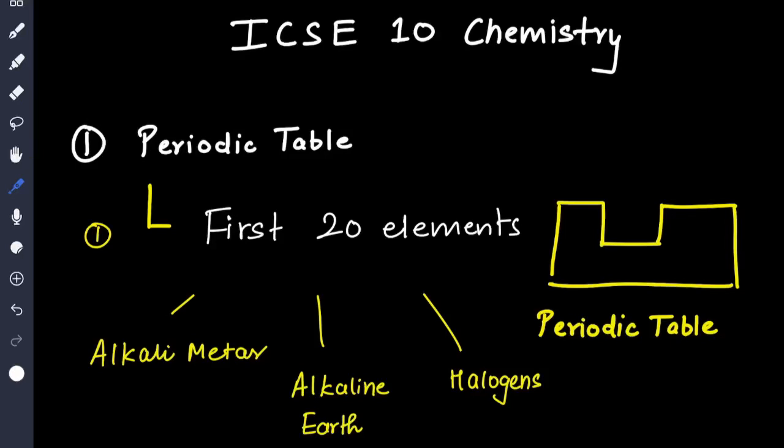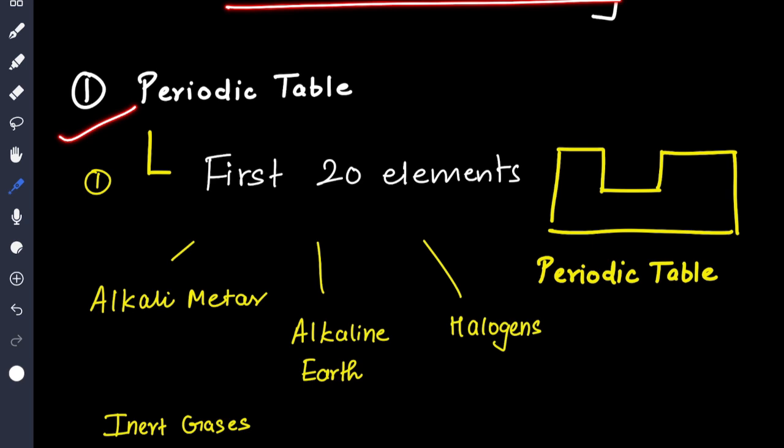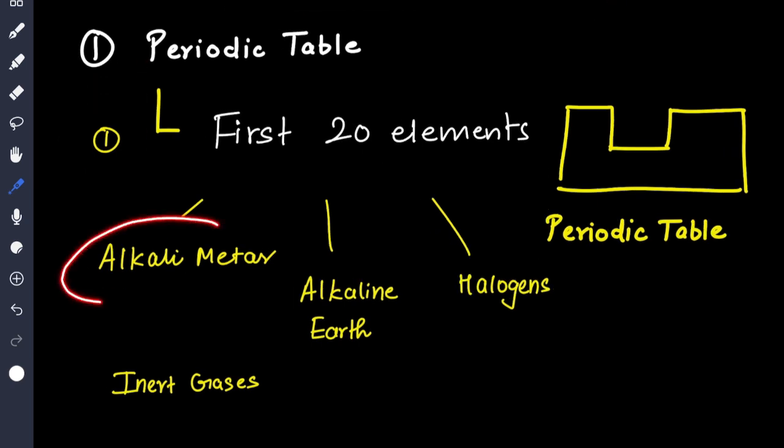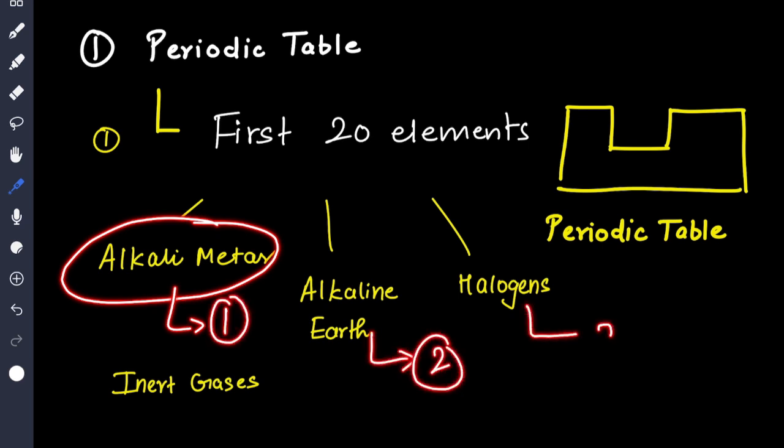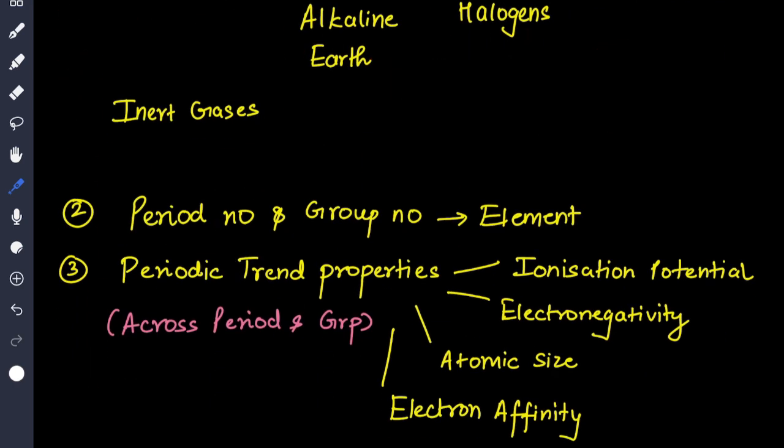Hi everybody, in this video we'll be starting with important topics of ICSE 10th chemistry. First is the periodic table. You have to learn the first 20 elements by heart. Alkali metals are present in group 1, alkaline earth metals in group 2, halogens in group 17, and inert gases in group 18.